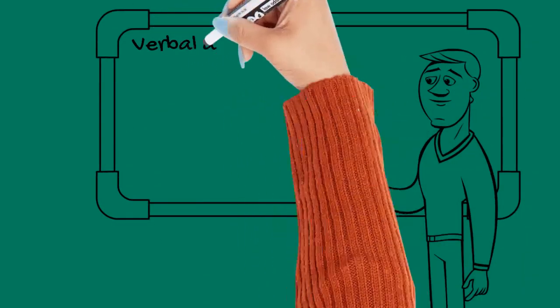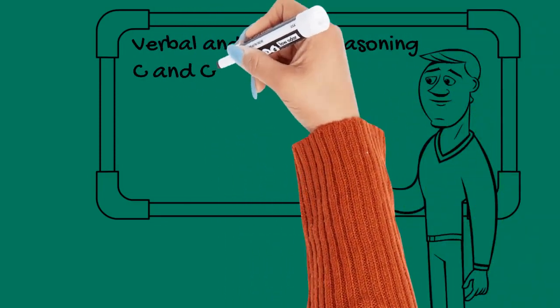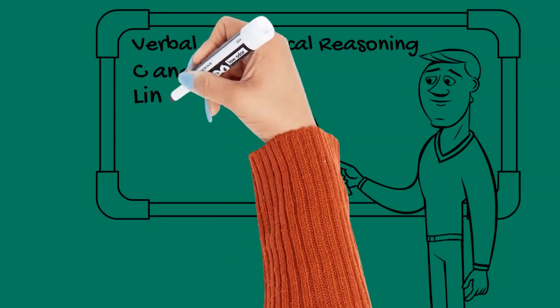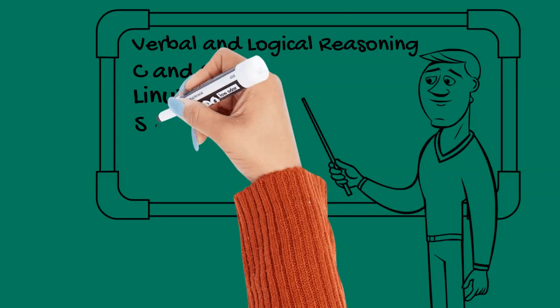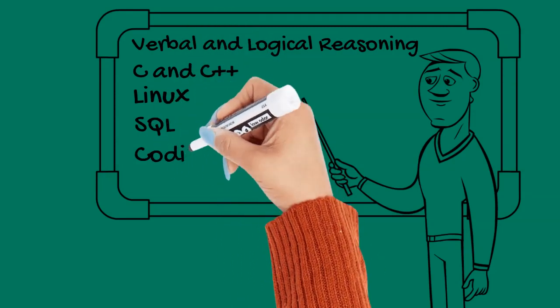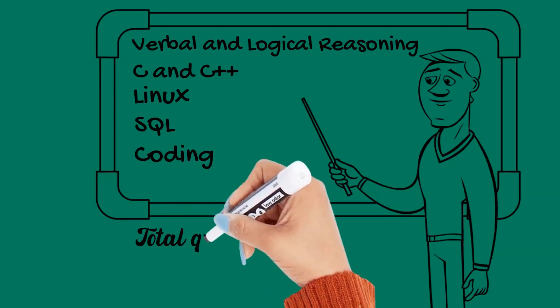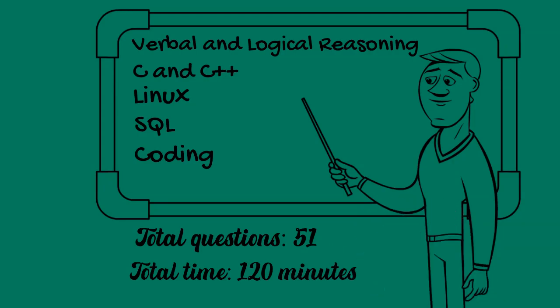So basically first is Verbal and Logical Reasoning. Next is C and C++, both are tested. And next is your Linux. This is very important. And SQL. Linux and SQL are very important and are tested in AMDOCS. And last one is Coding. Total questions are 51 and the total duration is 120 minutes.